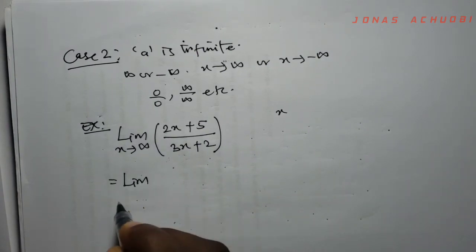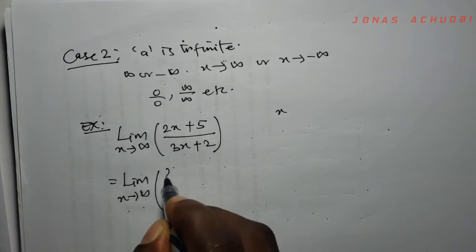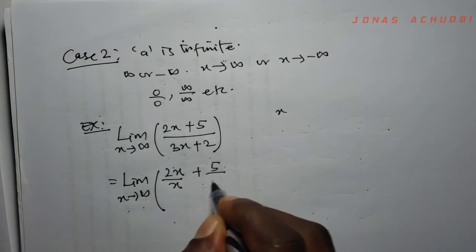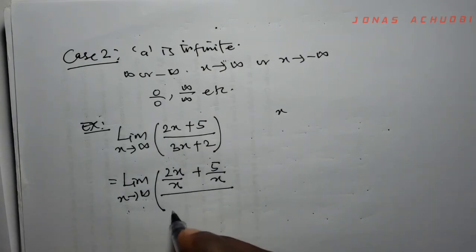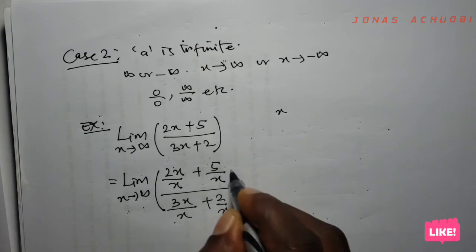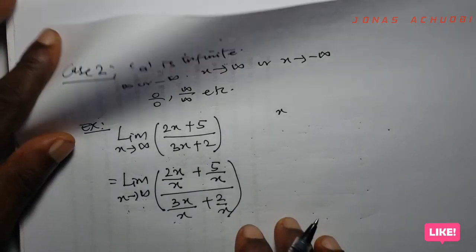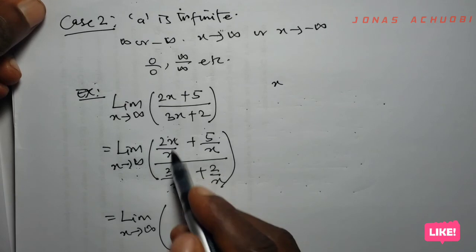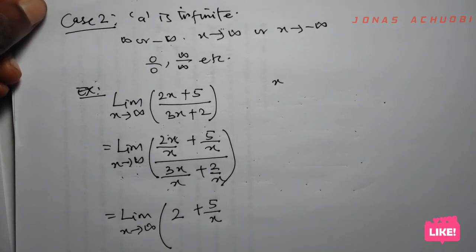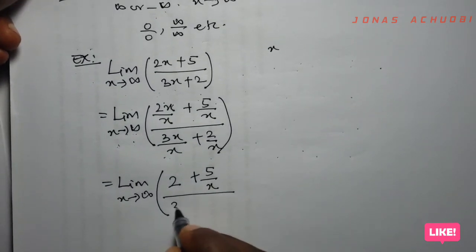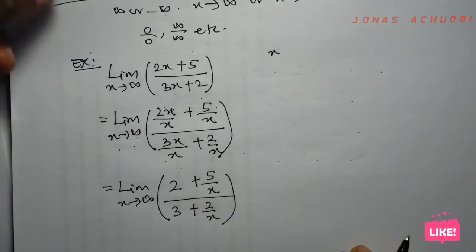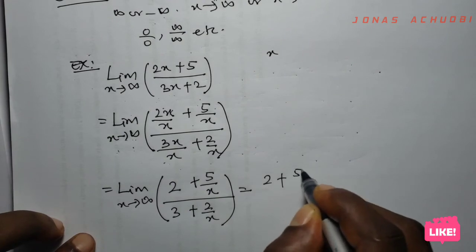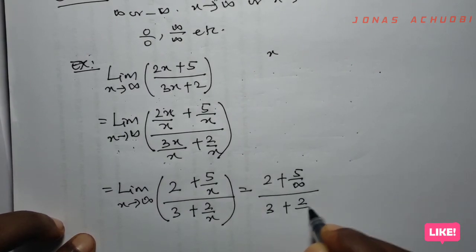We divide every term in the numerator and denominator by the highest power of x, which is x. This gives us the limit as x tends to infinity of (2x/x + 5/x) / (3x/x + 2/x), and after substituting infinity we get (2 + 5/∞) / (3 + 2/∞).